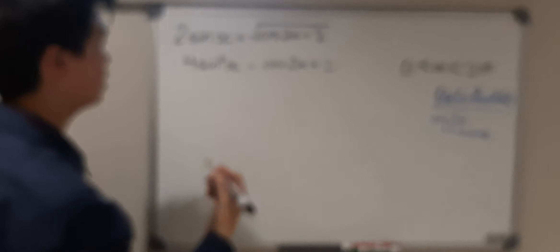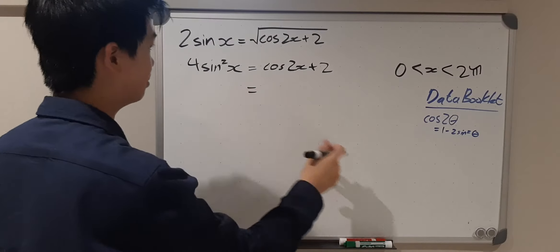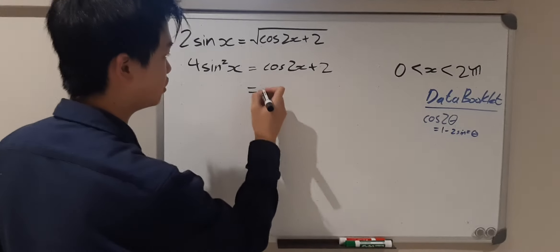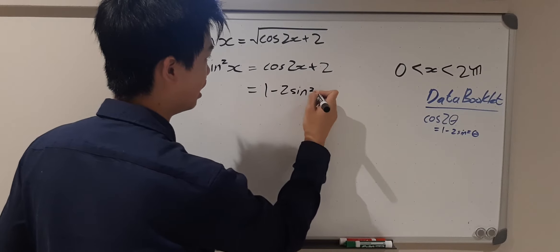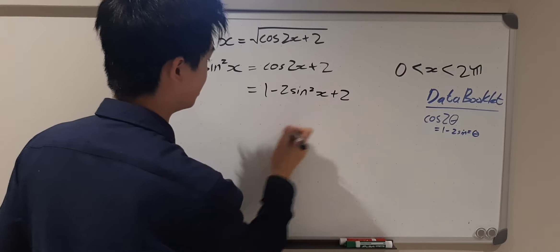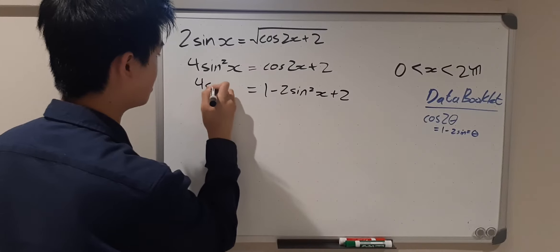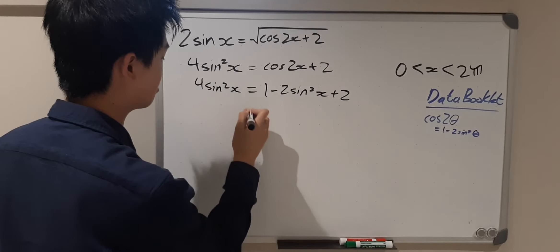Okay, now we can apply the double angle identity for cosine. So cos(2x) = 1 - 2sin²(x) + 2, and that remains the same on this side, 4sin²(x).